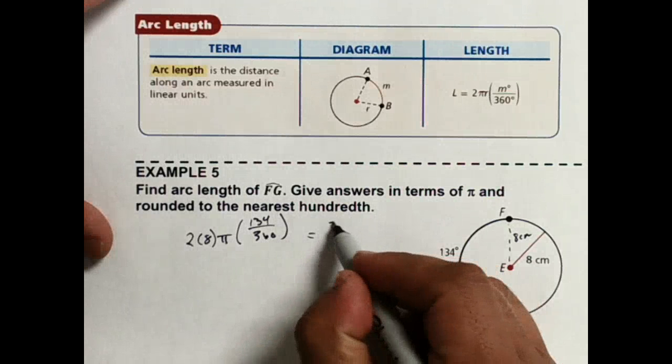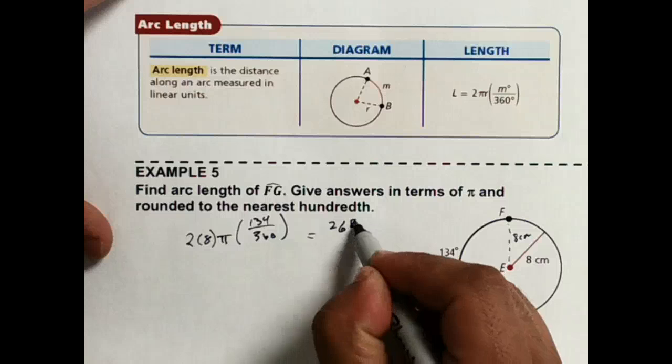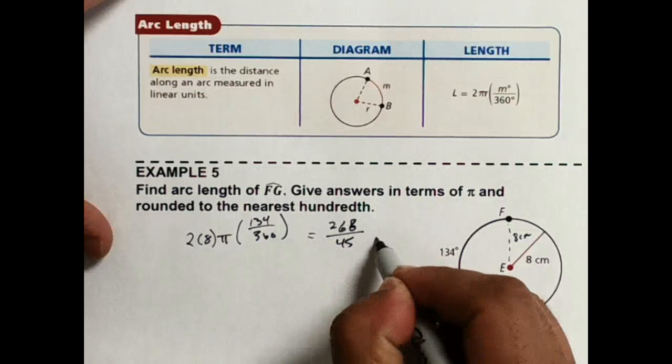All right, multiplying this out in fraction form, I get 268 over 45 pi.